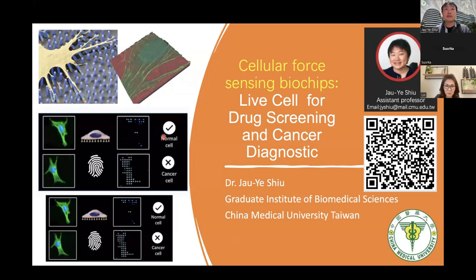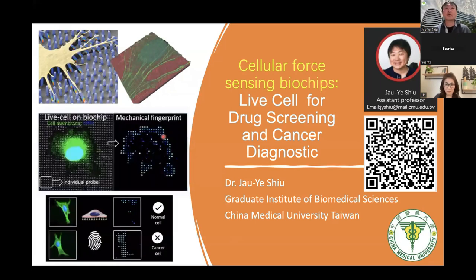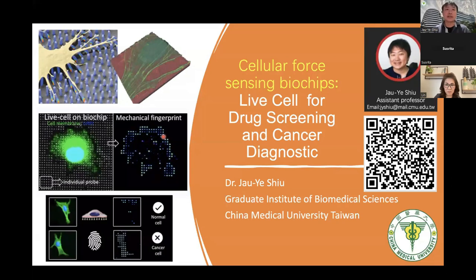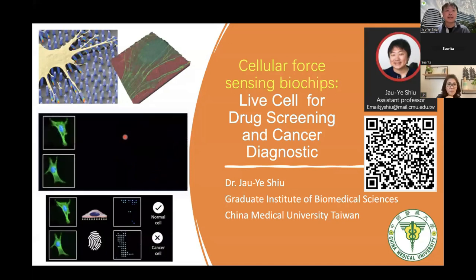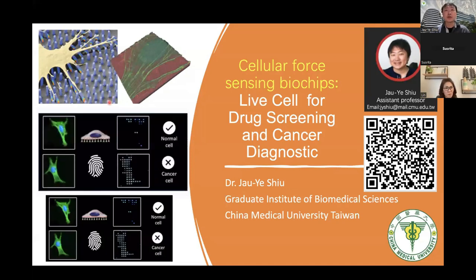Every single cell has a unique mechanical state when the cells are attached to a surface. By knowing the cell-substrate interaction, we can better understand whether cells are in health or disease. In our group, we have developed a cellular force sensing biochip that can detect cell-generated force in real time and in a high throughput manner. By visualizing this cellular force mapping imaging or video, we can identify the state of the cell through their mechanical response.